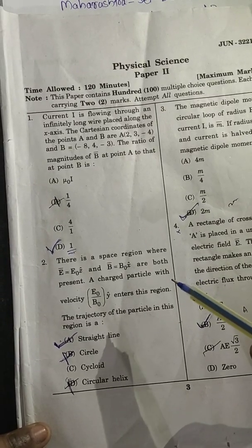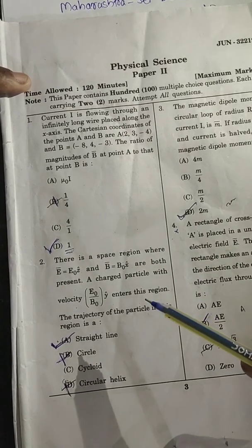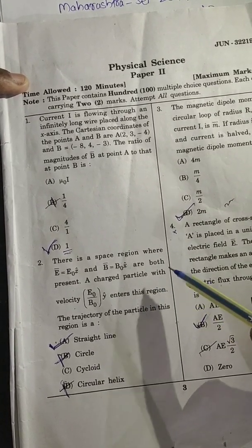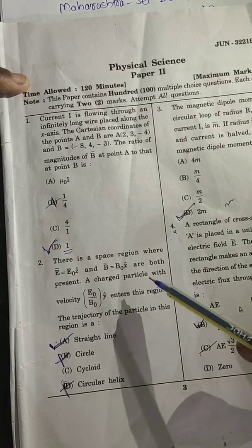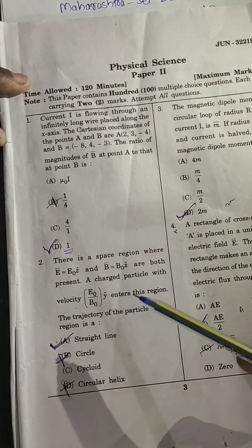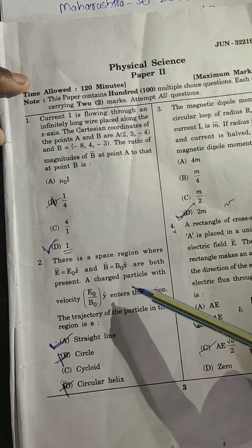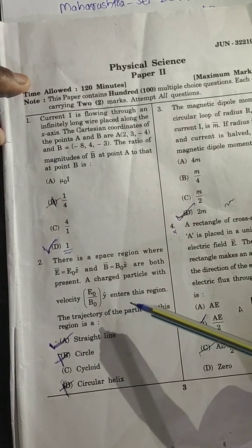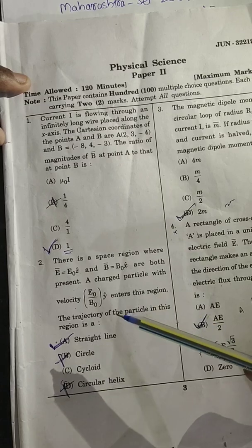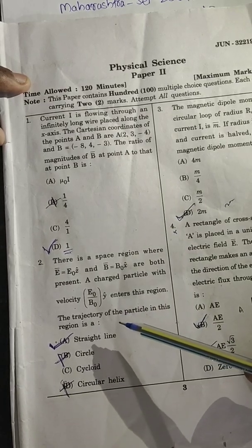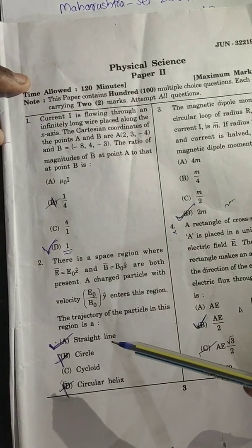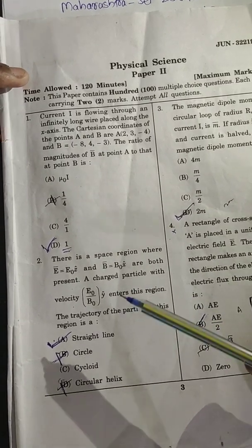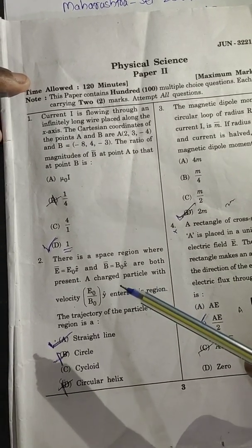There is a space region where electric field is equal to E₀ in z cap direction and magnetic field B is equal to B₀ in x cap direction are both present. A charged particle with velocity E₀ upon B₀ in y cap direction enters this region. Now we have to find the phase trajectory of the particle.